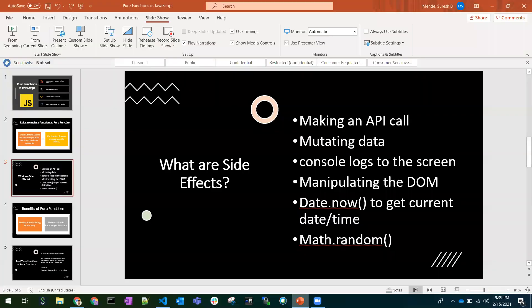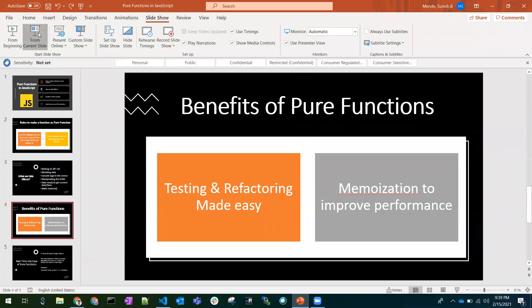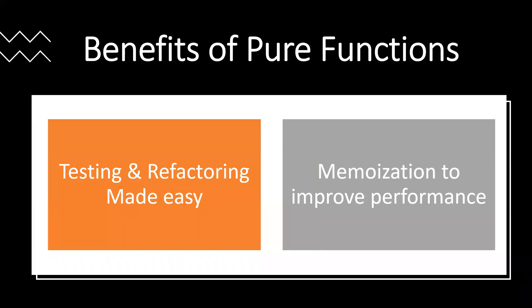So what are the advantages we got? We have discussed what is a pure function. Now, what are the benefits of making the function a pure function? The function is easy to test and easy to refactor. It is predictable at any point of time.